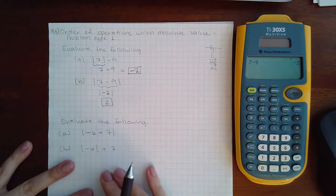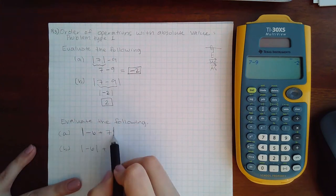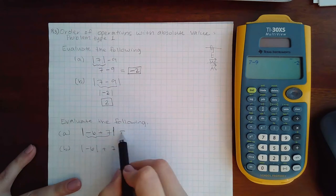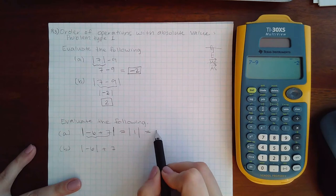Similarly, for another example, there's something to do inside the bars, so that must be done first. I get bars with a positive one on the inside, and then for it to come out, it's still going to be positive one.